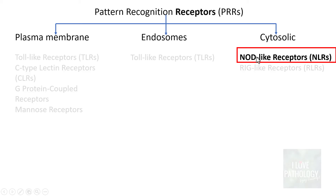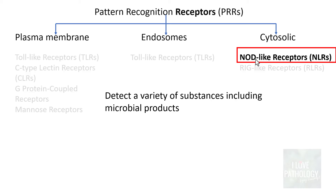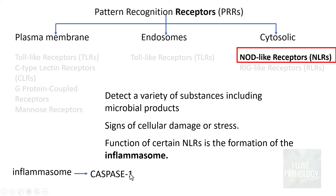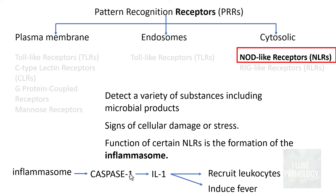NOD-like receptors are cytosolic receptors seen within the cytoplasm. They detect a variety of substances including microbial products present within the cytoplasm, and their expression indicates cellular damage or stress. The most important function of NOD-like receptors is the formation of the inflammasome — a structure that activates caspase-1, which in turn activates interleukin-1. Interleukin-1 recruits leukocytes and induces fever.